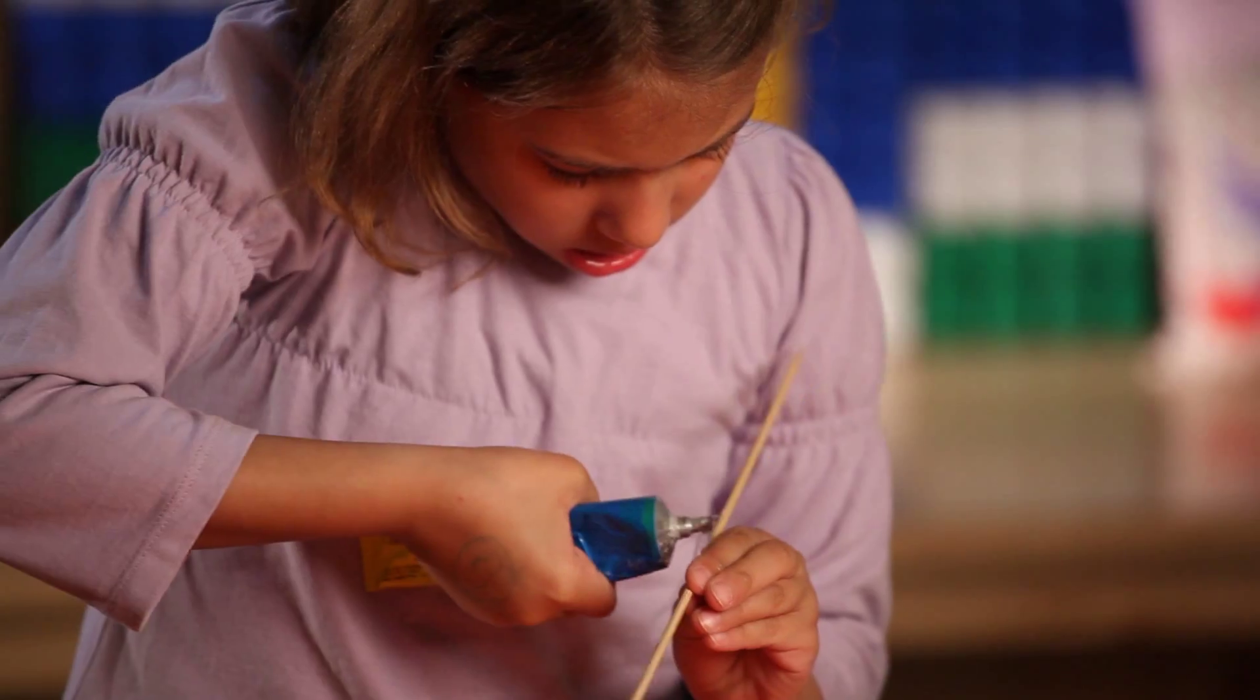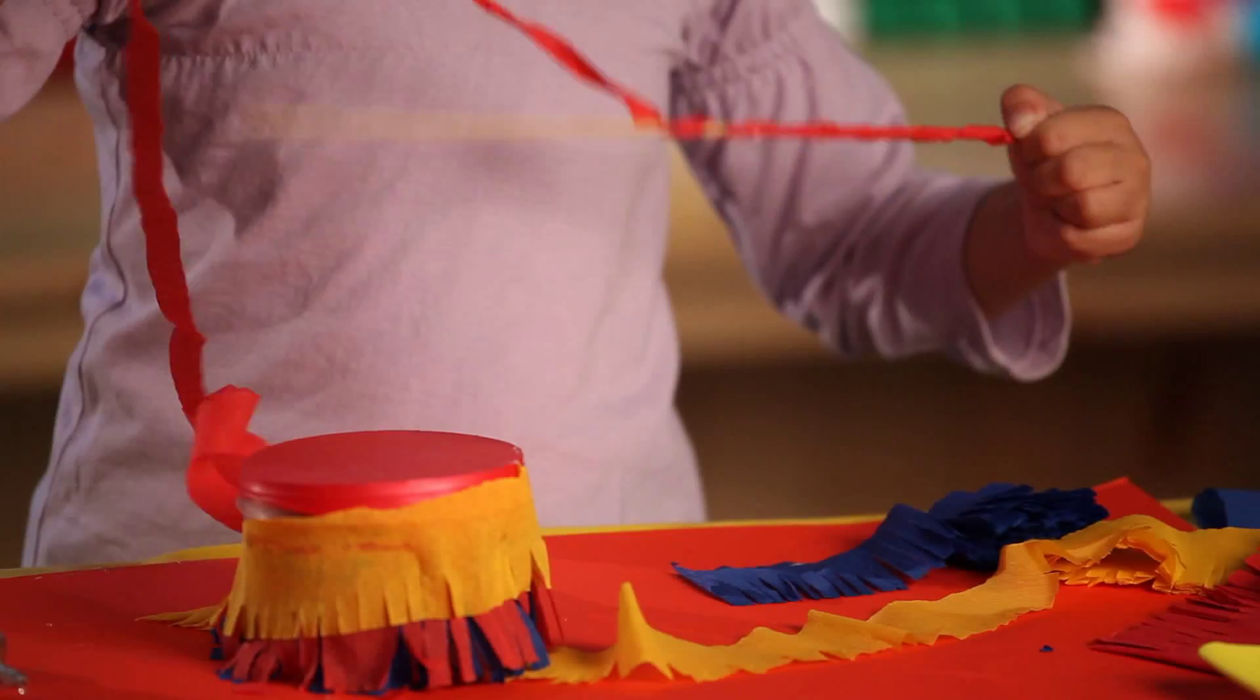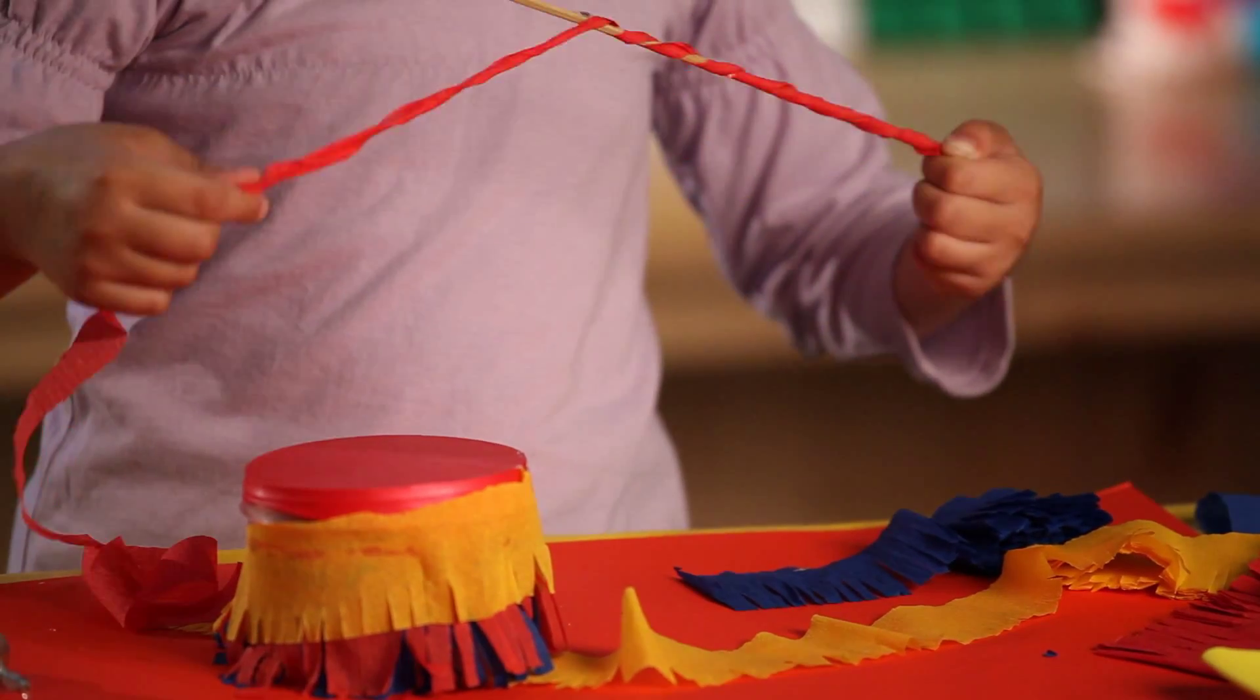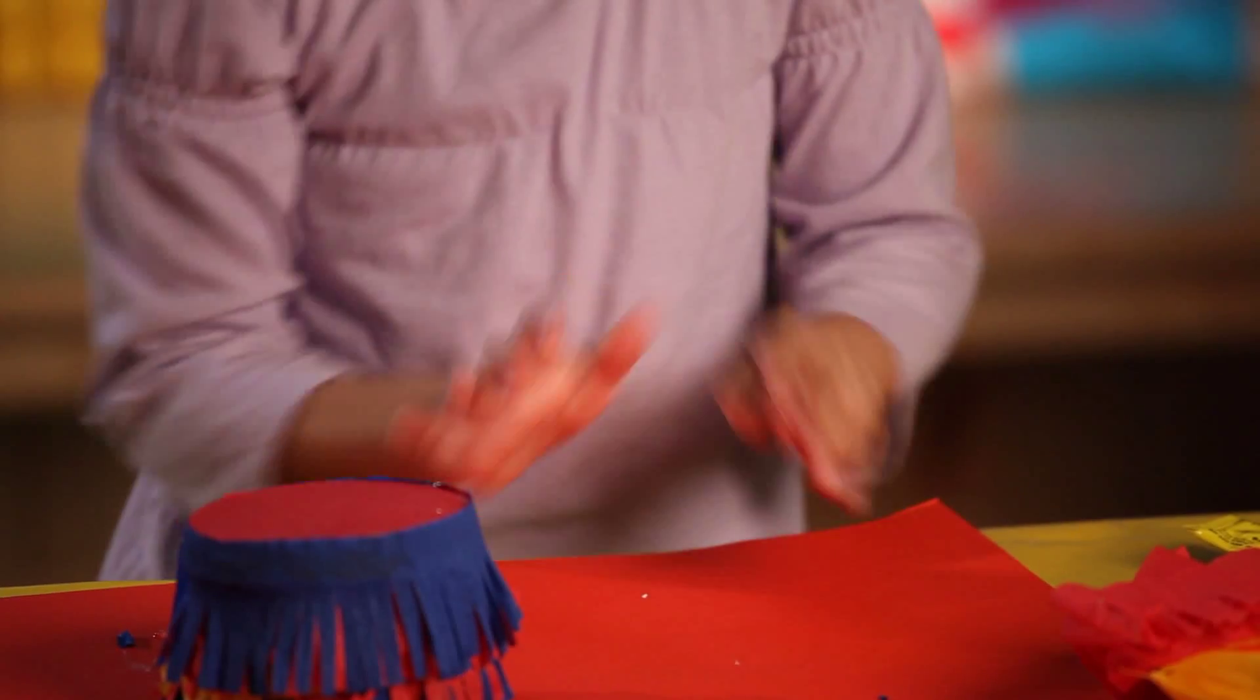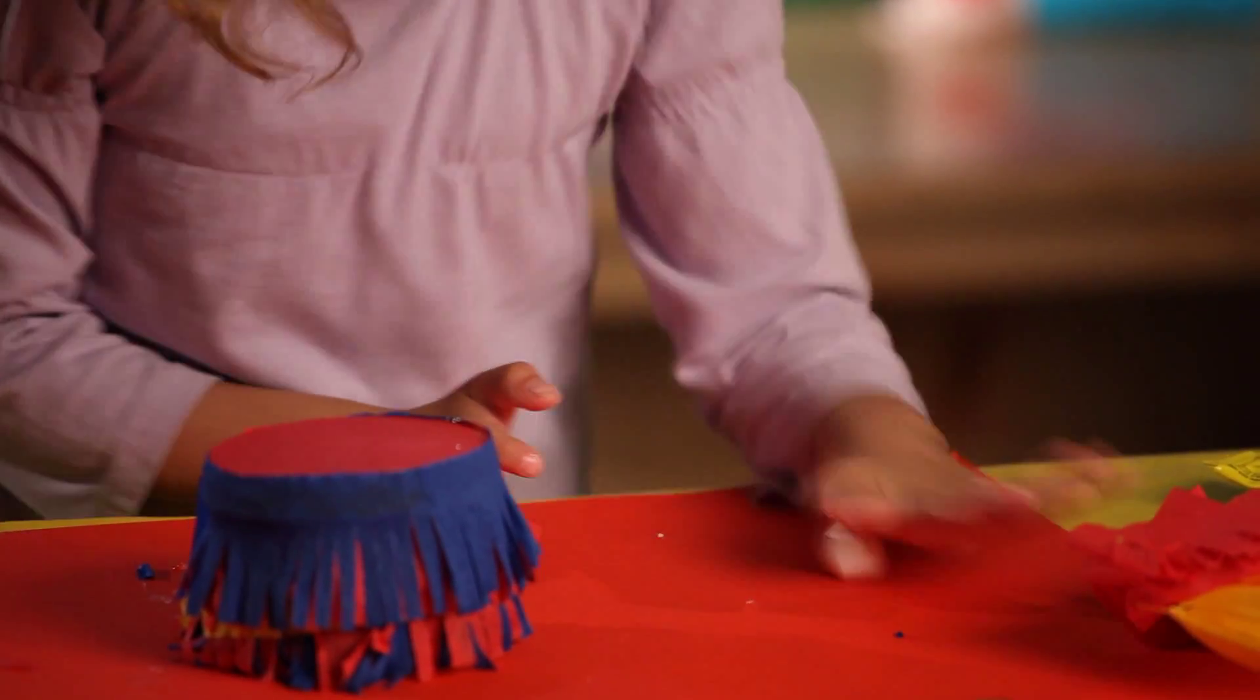Put some glue on the wooden skewer and wrap krep paper around it. Make a ball out of the clay and stick it on the top of the skewer.